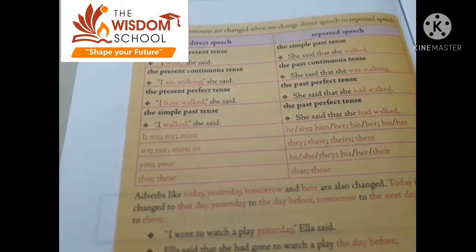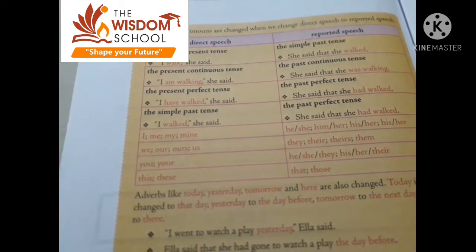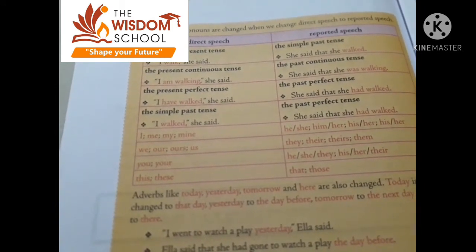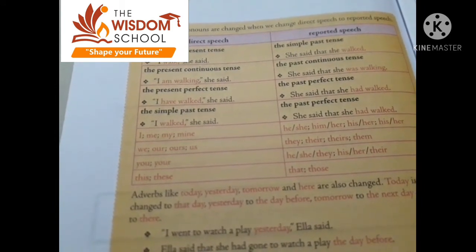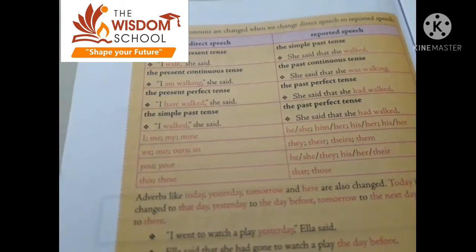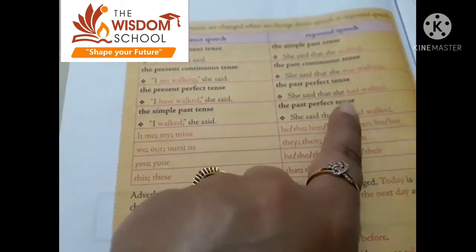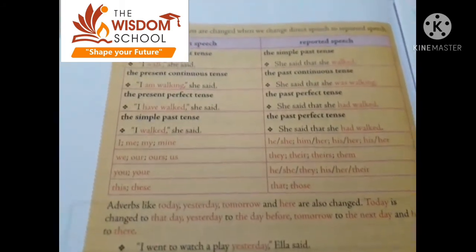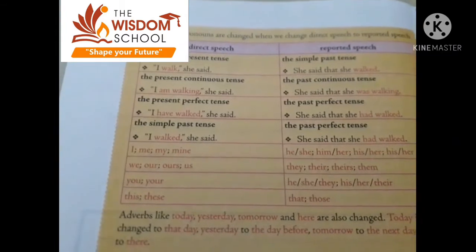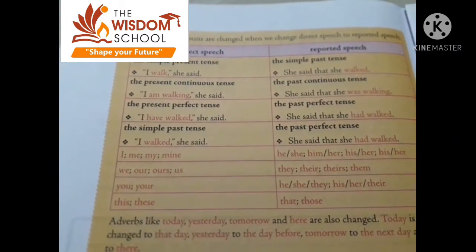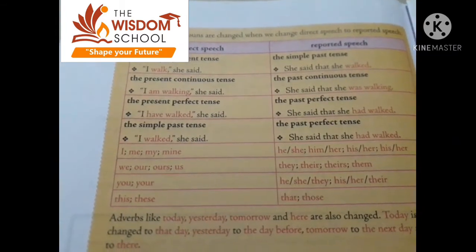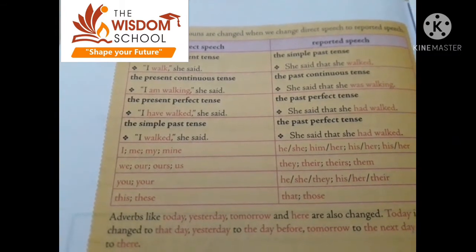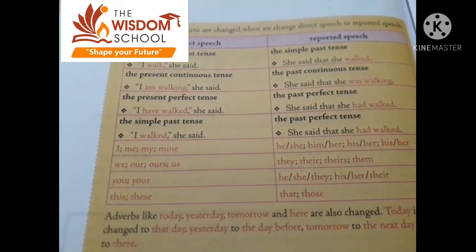Simple past tense 'walked' changes to past perfect 'had walked.' So to summarize: simple present changes into simple past, present continuous changes into past continuous, present perfect changes into past perfect, and simple past changes into past perfect tense.